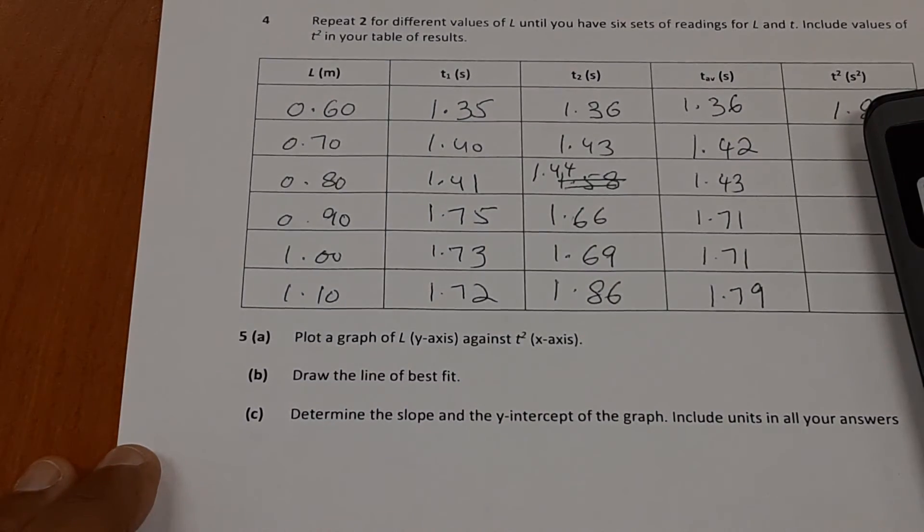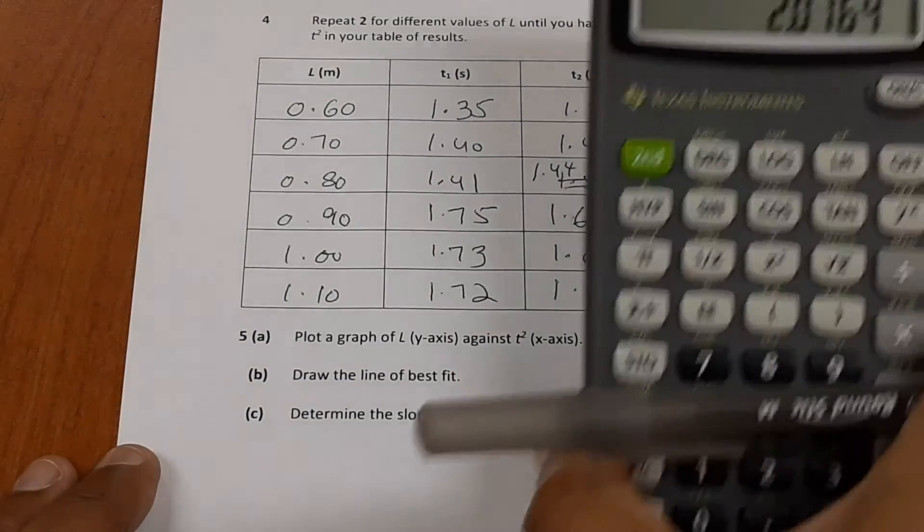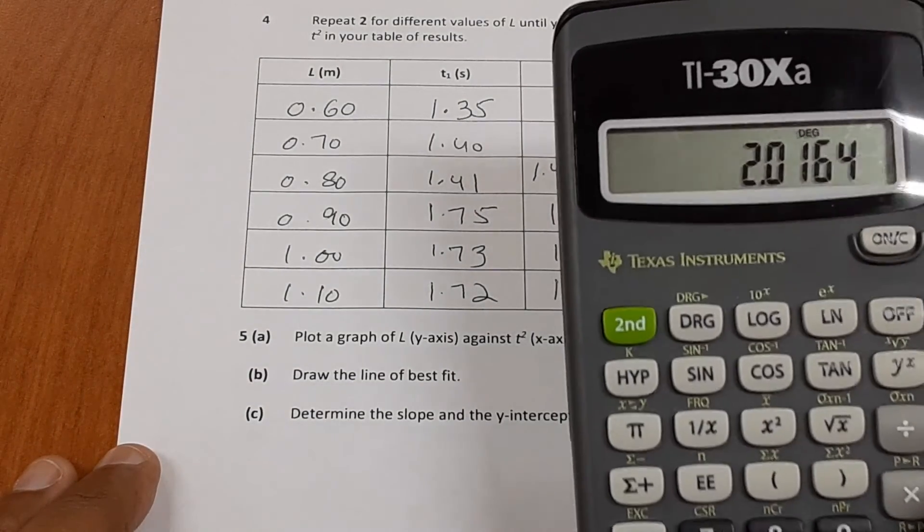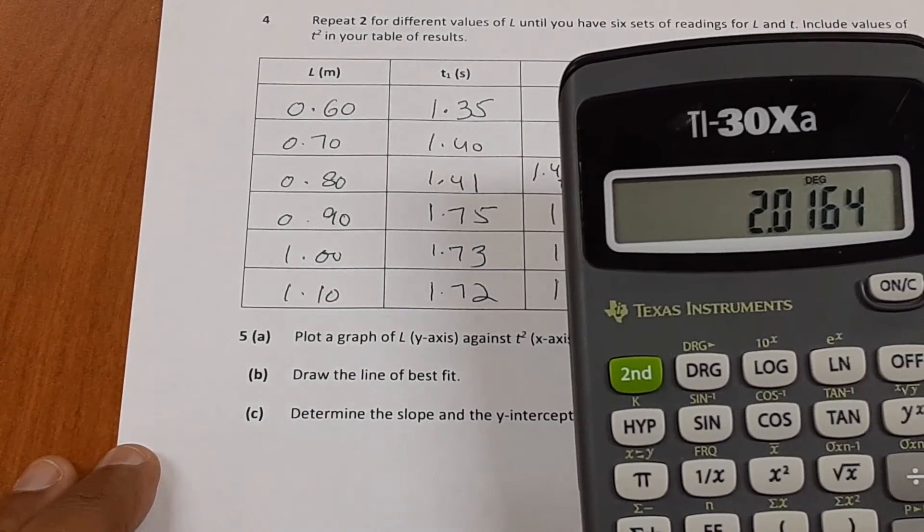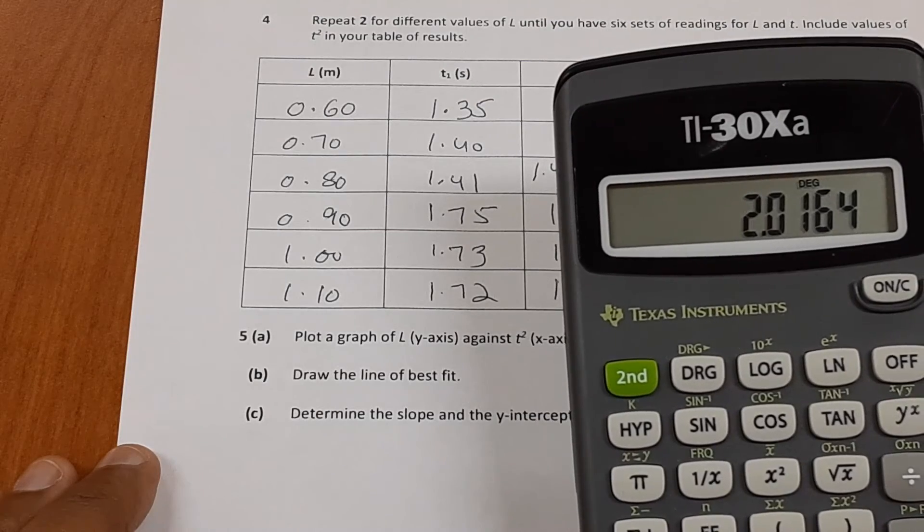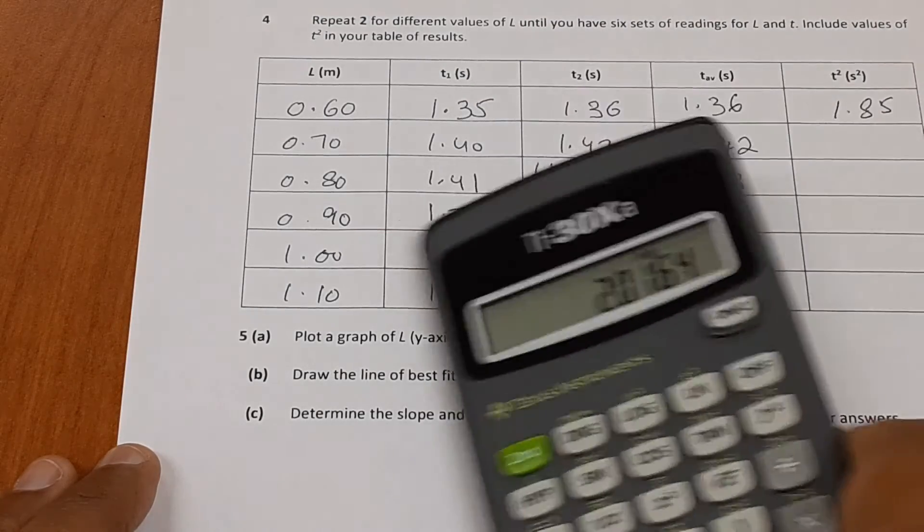Next, I have 1.42 squared. And the calculator shows 2.0164. So I would write it as 2.02. Remember, three significant figures.